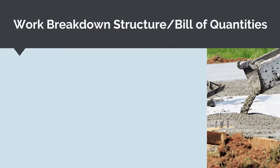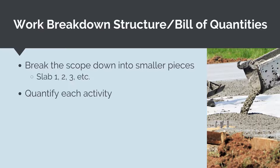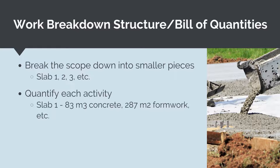What we want to do is break the project scope down into component pieces. For example, if the scope we are pricing has several different concrete slabs, we could break the scope down into slab 1, 2 and 3. Next, we want to measure or estimate each of the key quantities for each activity. For example, for a concrete slab, we will want to know the cubic meters of concrete, the meters squared of formwork, the tons of steel reinforcement and so on. We will either need to measure these quantities from the drawings or estimate the quantities using estimating rules.